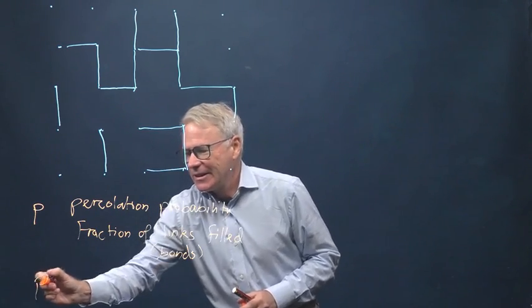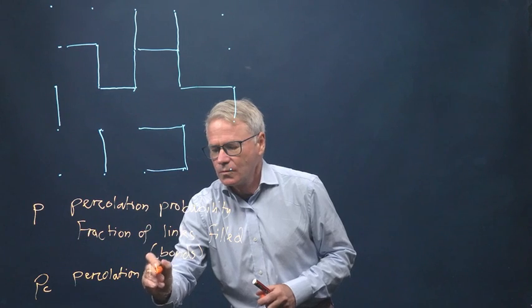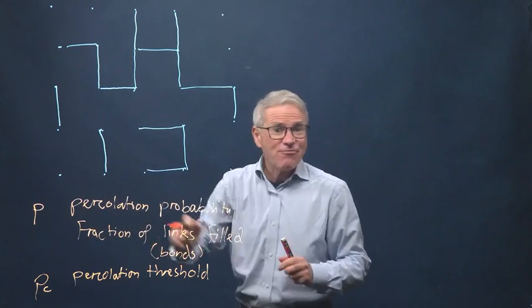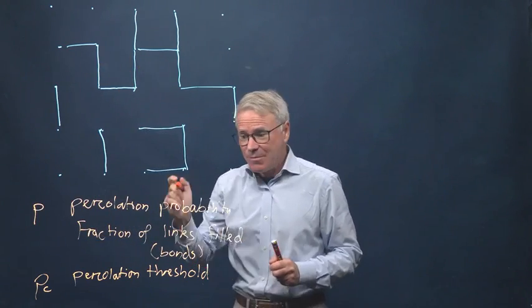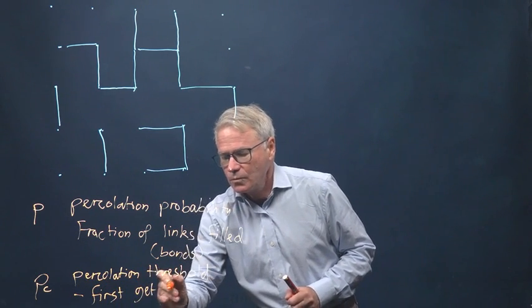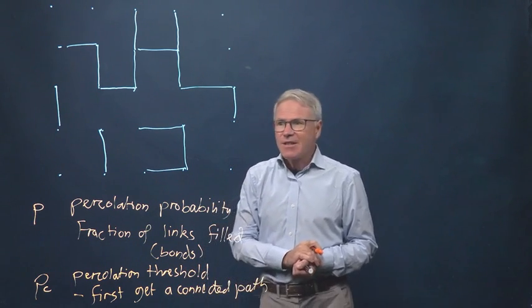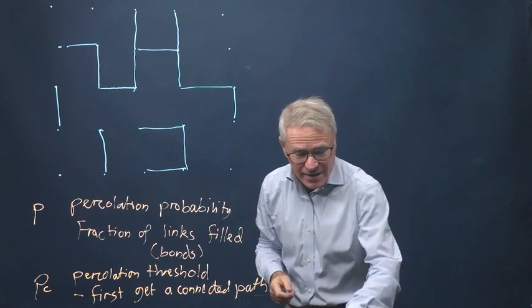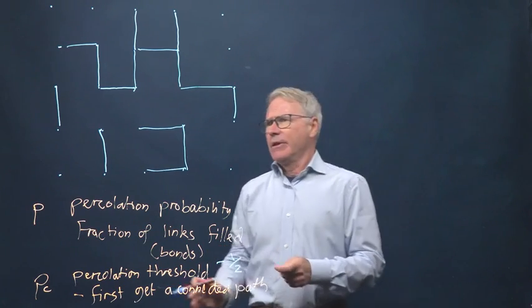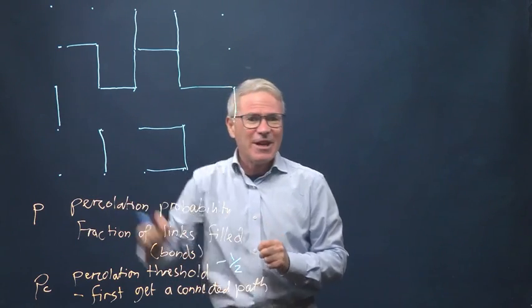PC is the percolation threshold. And that's the filling fraction, the percolation probability, at which you first get a connected path. In this particular example, if it's a square lattice, the percolation threshold is one half. Now, you might say, is it a half? It doesn't look like a half on this diagram. And anyway, it's random. What happens if just by luck, you go fill, fill, fill, fill, and you connect across?